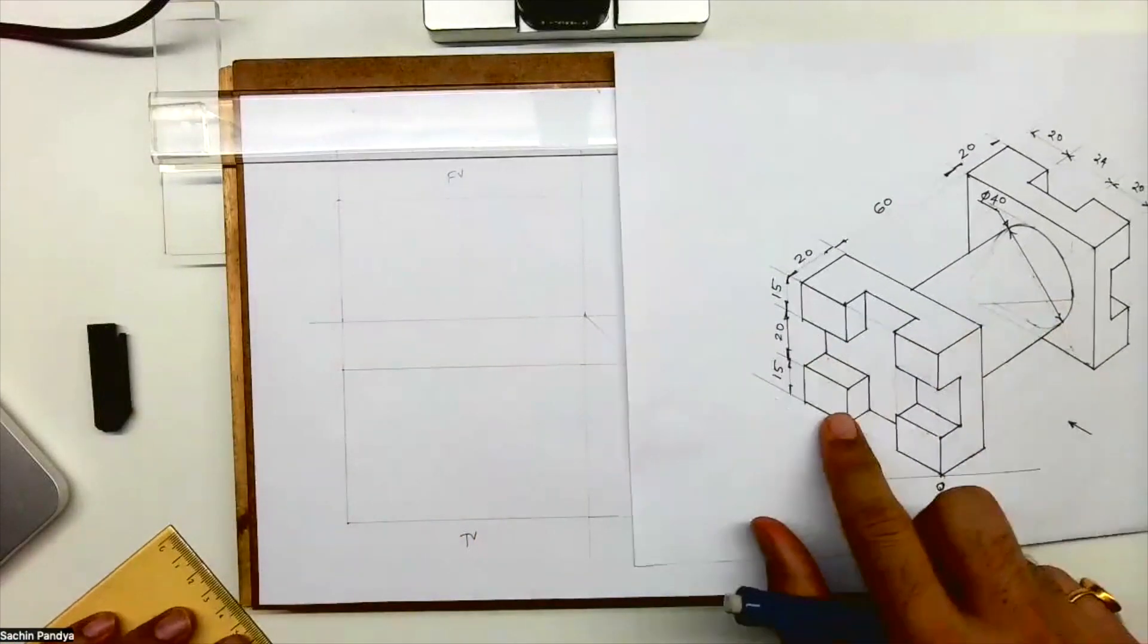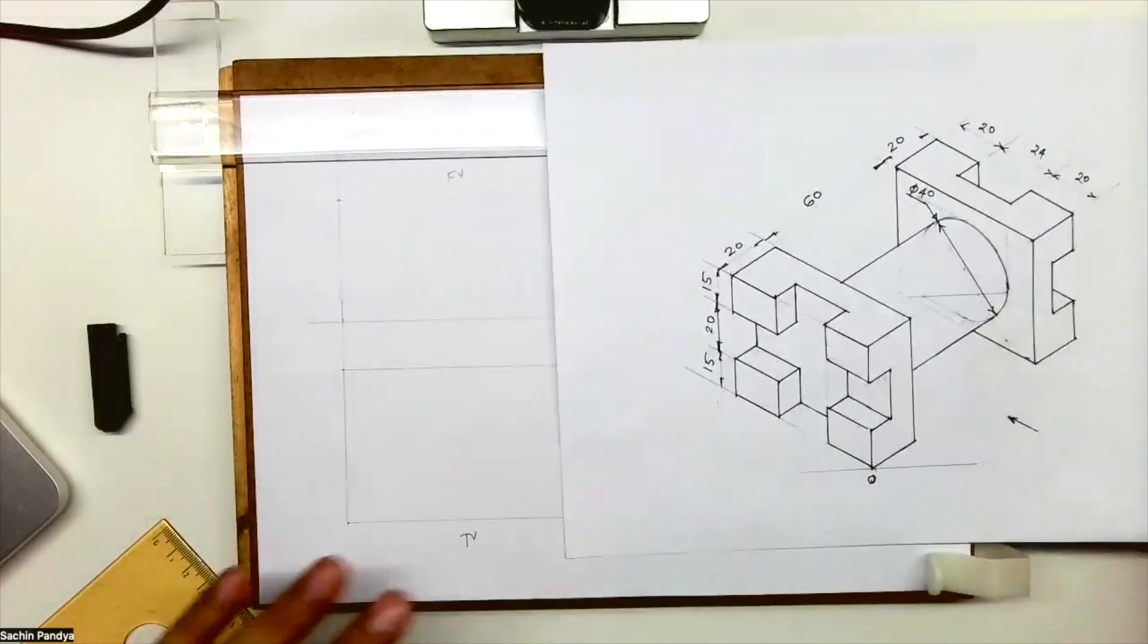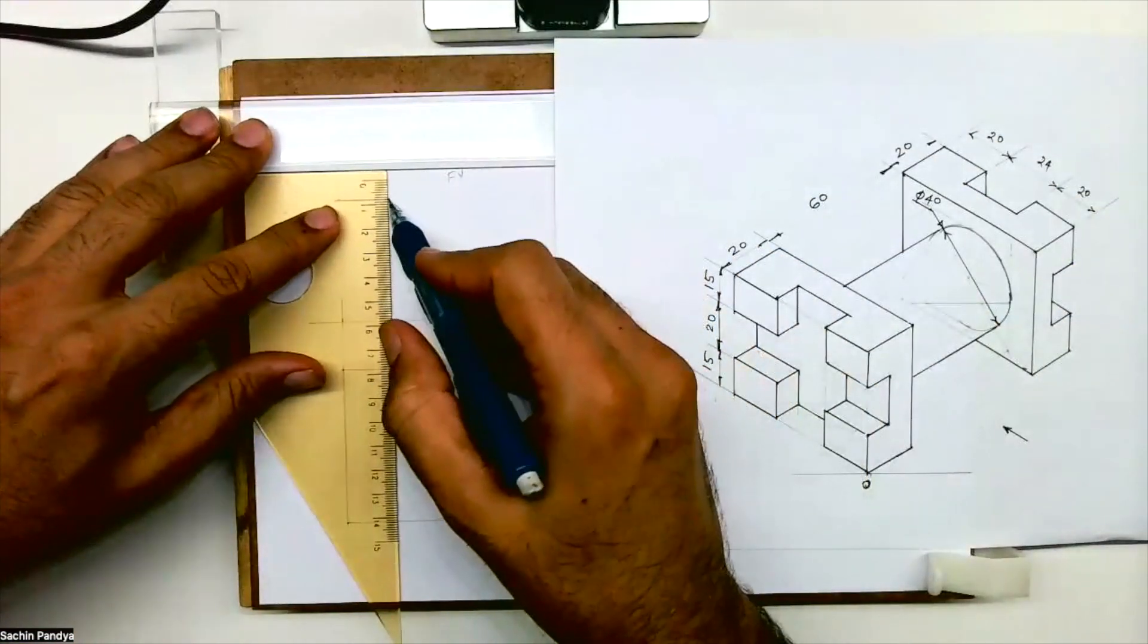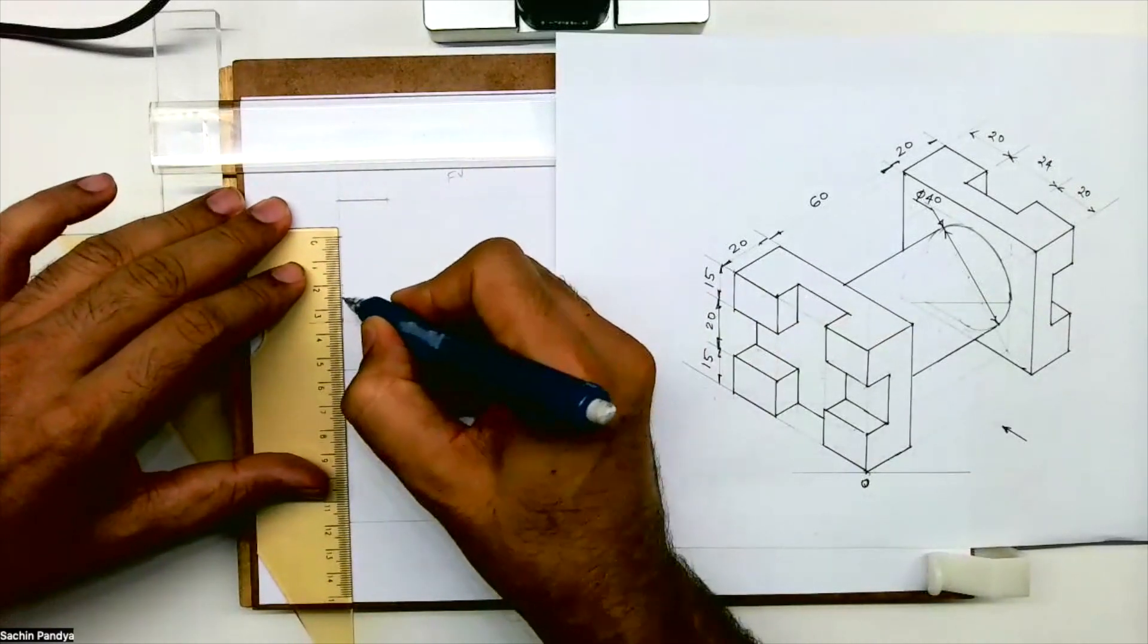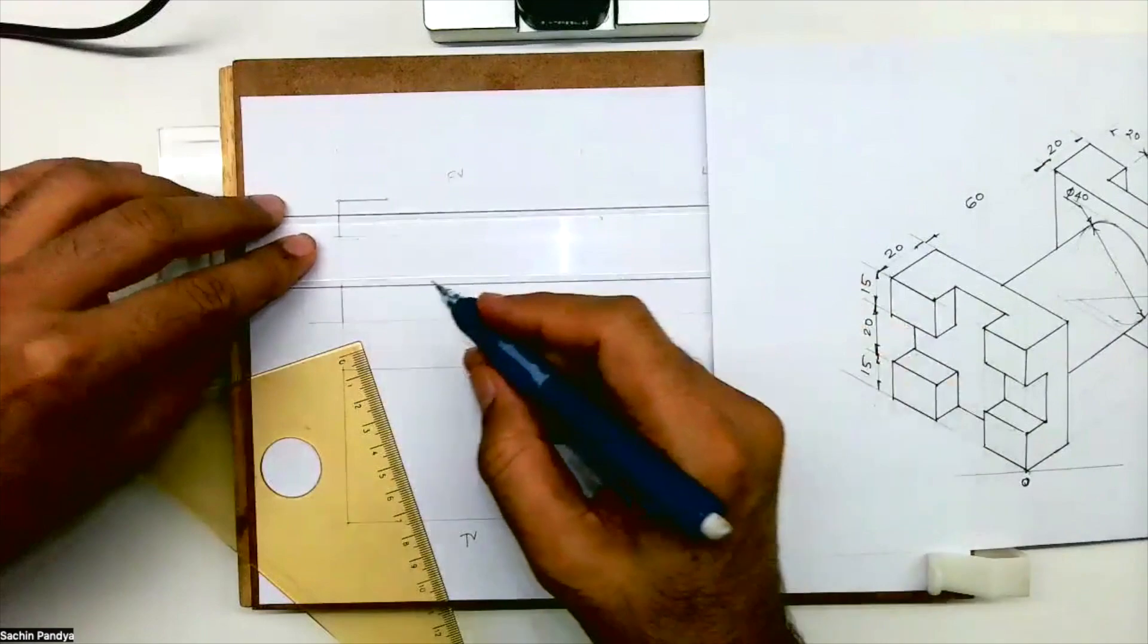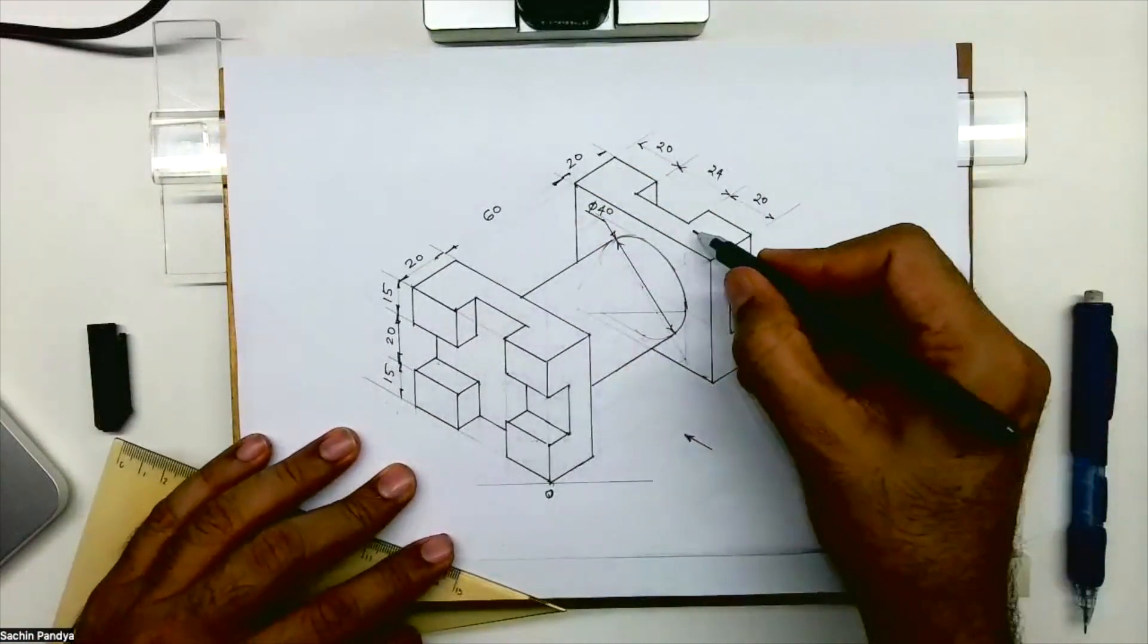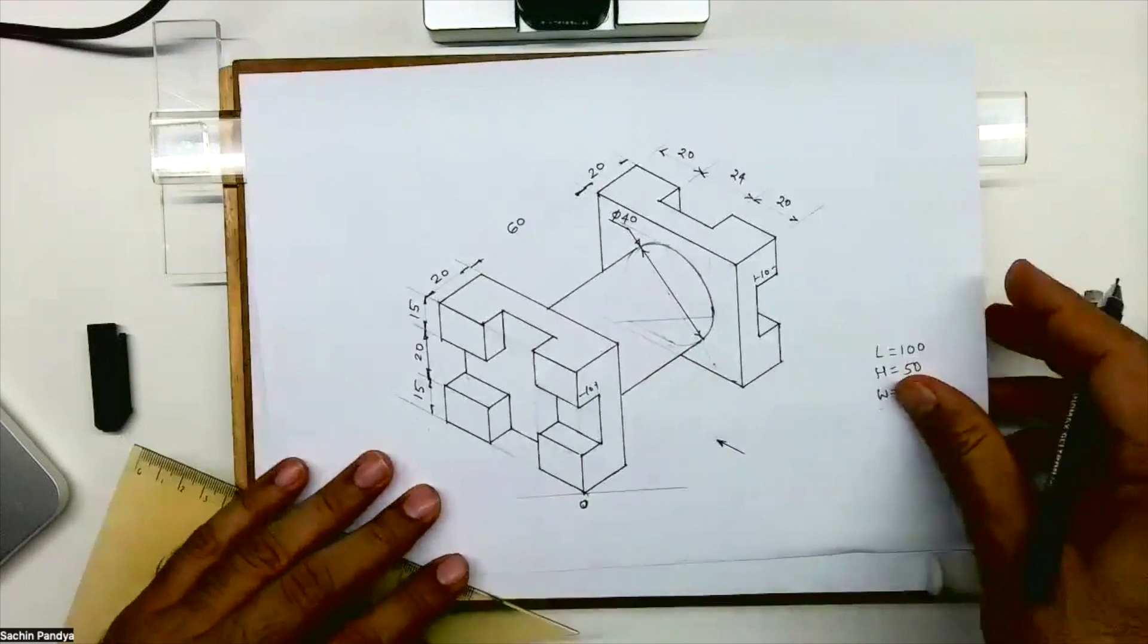Now I have to draw front view. When I see from here I will see this V-shape and this rectangle. This is 20, so I can mark 20. Initially I'm drawing it light because we are going to do section also. This height is 15, then 20, then 15. This goes inside by 10.